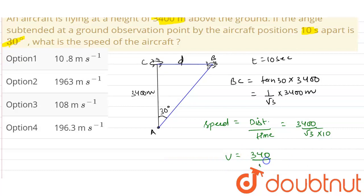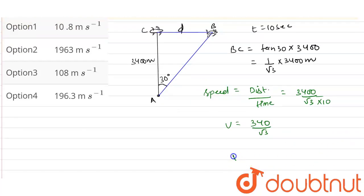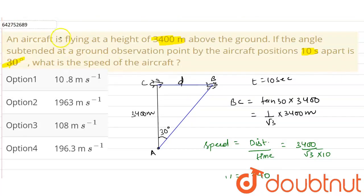340 upon root 3. Solving this, we get the value of V as 196.3 meters per second. From the options, we choose option number 4, that is 196.3 meters per second, which is the correct option.